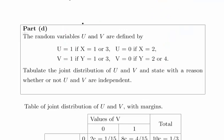So the random variables u and v are defined as follows: u is equal to 1 if x is equal to 1 or 3, and u is equal to 0 if x is equal to 2. v is equal to 1 if y is equal to 1 or 3, and v is equal to 0 if y is equal to 2 or 4. Tabulate the joint distribution of u and v and state with reason whether or not u and v are independent.